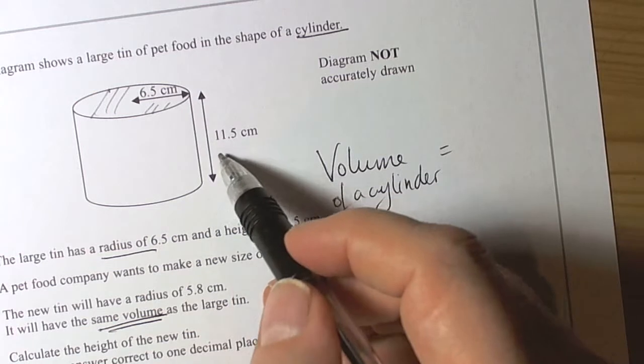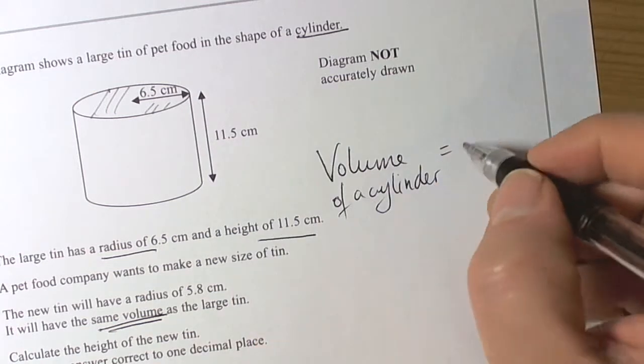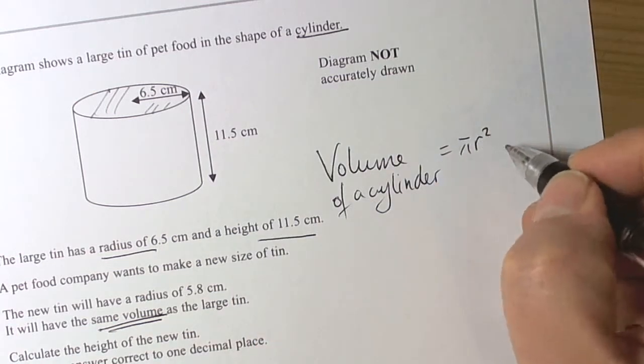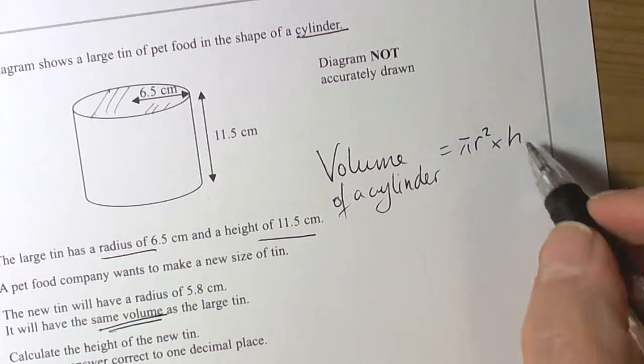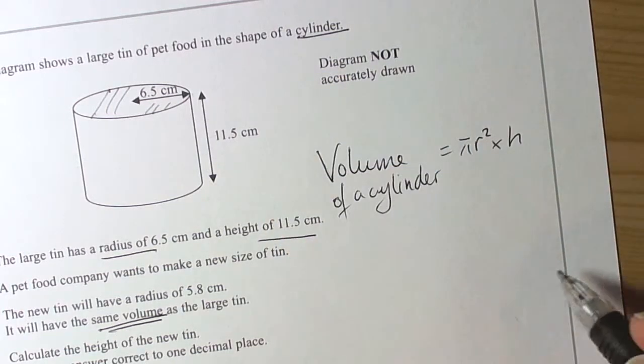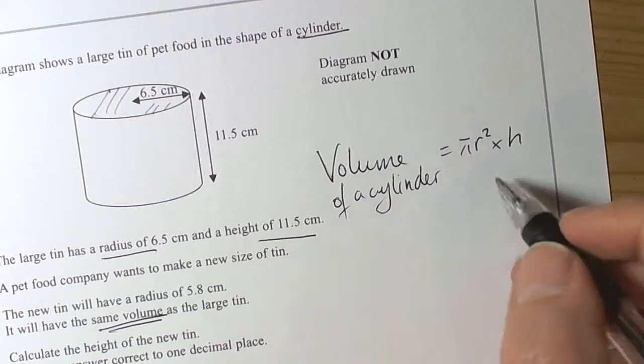And times it by the length of the shape, which in this case is 11.5. So the volume of the cylinder is going to be the area of the circle, which is πr², times the height of the cylinder, the length of the cylinder. So that's the same as the idea of a prism.